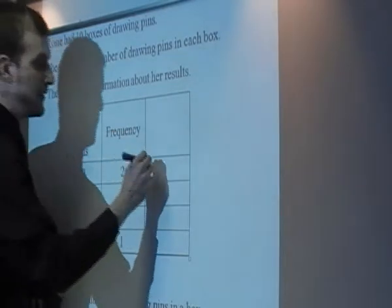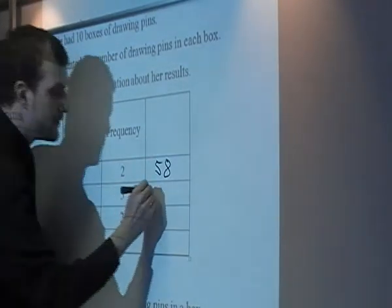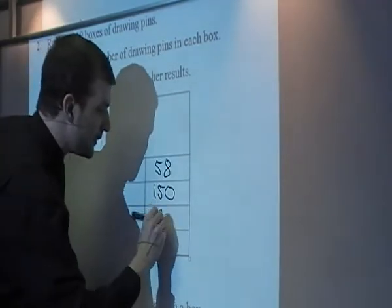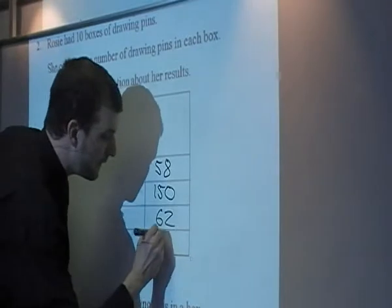So 29 times 2, 58. 30 times 5, 150. 31 times 2, 62. And 32 times 1, 32.